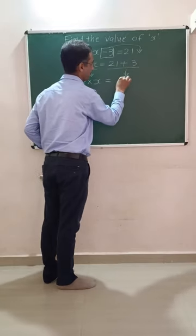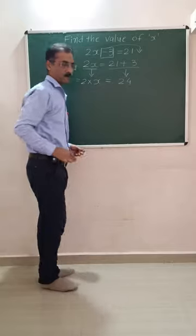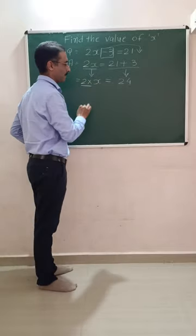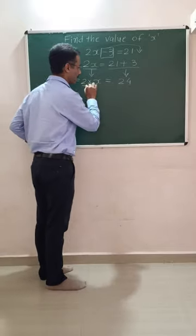Now 21 plus 3 is equal to 24. So we have 2 times x is equal to 24. We have 2 in multiplication form on the left side.